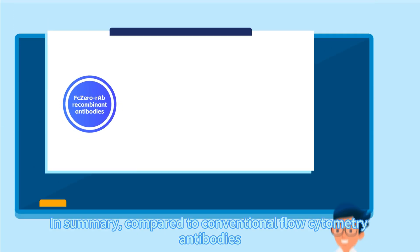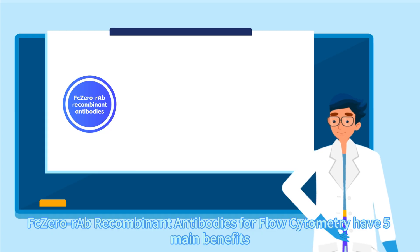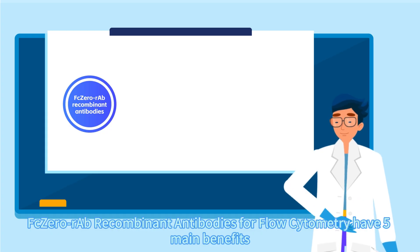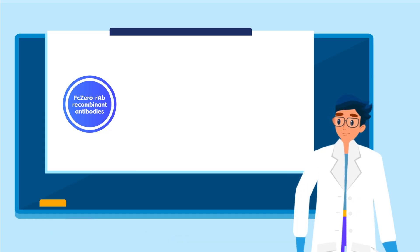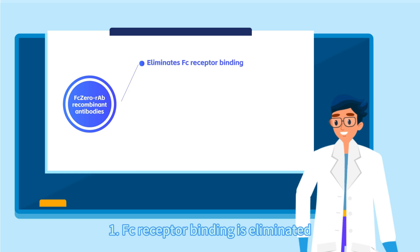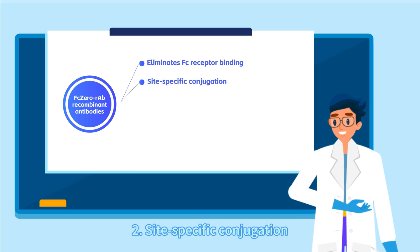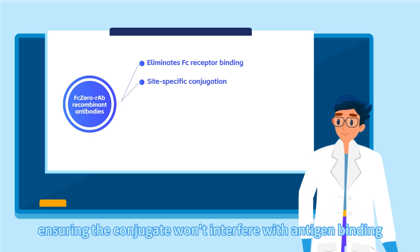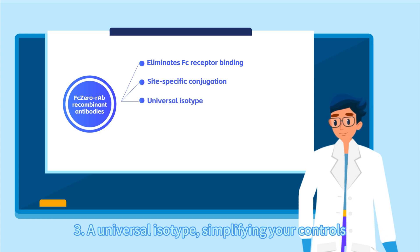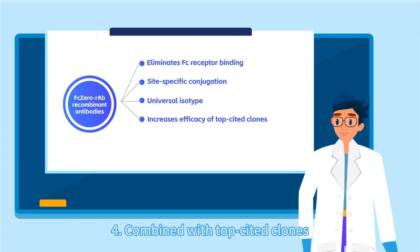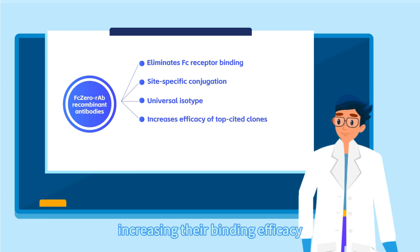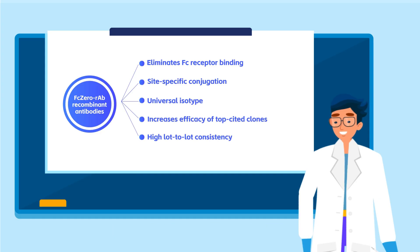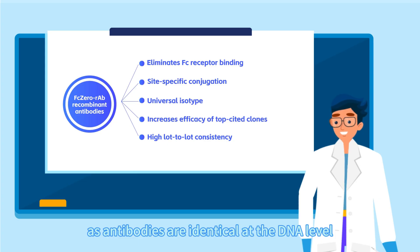In summary, compared to conventional flow cytometry antibodies, FCo-RAB recombinant antibodies for flow cytometry have five main benefits. First, FC receptor binding is eliminated. Second, site-specific conjugation, ensuring the conjugate won't interfere with antigen binding. Third, a universal isotype, simplifying your controls. Fourth, combined with top-cited clones, increasing their binding efficacy. Fifth, high lot-to-lot consistency, as antibodies are identical at the DNA level.